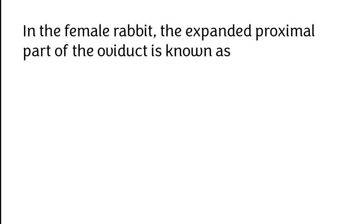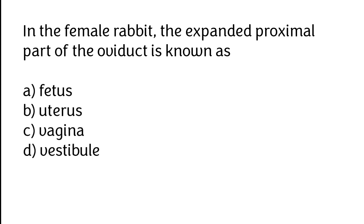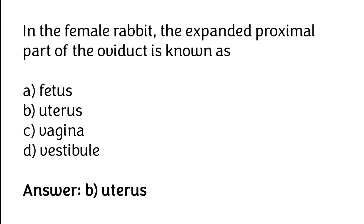In the female rabbit, the expanded proximal part of the oviduct is known as: A) Fetus, B) Uterus, C) Vagina, D) Vestibule. The correct answer is option B — in the female rabbit, the expanded proximal part of the oviduct is known as the uterus.